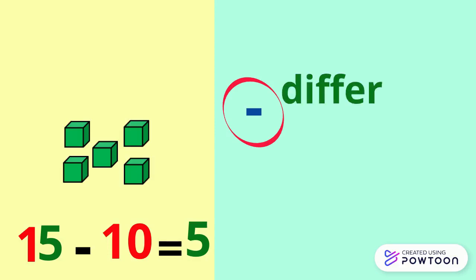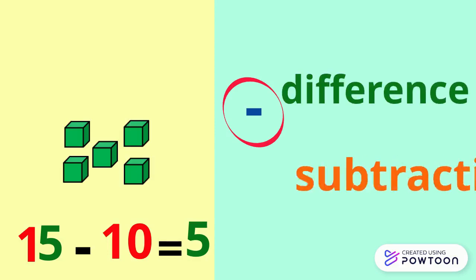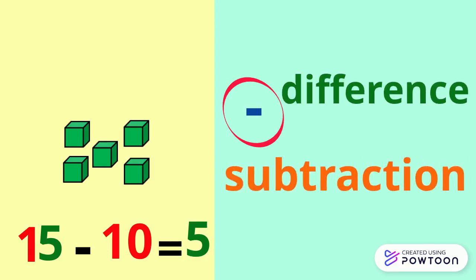Fifteen minus ten is the difference. The difference of two numbers is the result of the subtraction of two numbers. So, the difference between fifteen and ten is five.